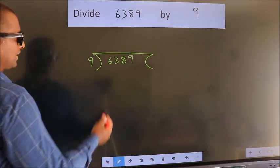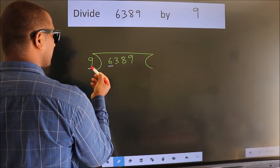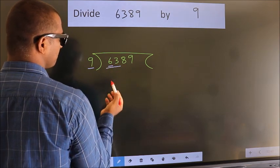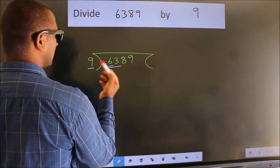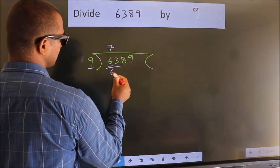here we have 6, here 9. 6 smaller than 9. So we should take 2 numbers, 63. When do we get 63? In 9 table, 9 7s, 63.